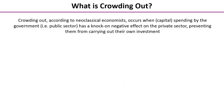Crowding out occurs when spending by the government — the public sector — has a knock-on negative effect on the private sector, and effectively prevents the private sector from carrying out their own investment.